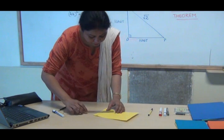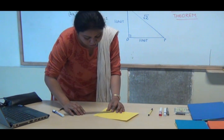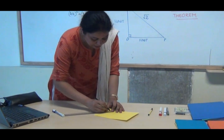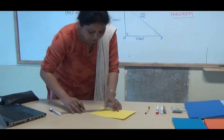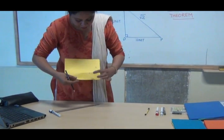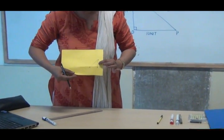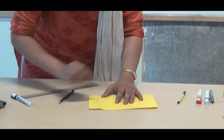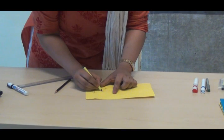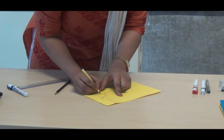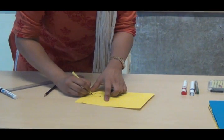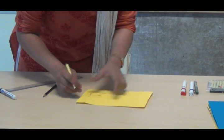Now I join them. What does this Pythagoras theorem tell us? That if it is a right angled triangle and both the base and the altitude are of one unit, then the hypotenuse is root two. This is one unit. This is one unit too. This is what we got.